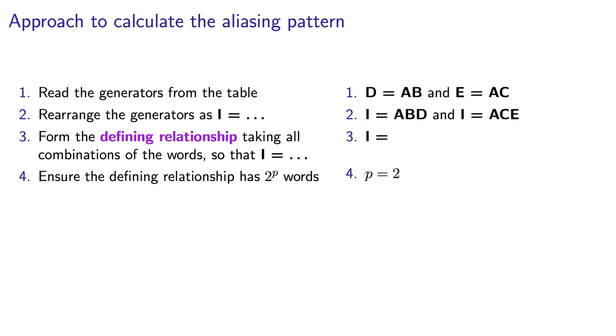We find them by taking all possible combinations of the rearranged generators. The simplest combination is to take the words on their own. So, my second word is ABD, and my third word in the defining relationship is ACE.